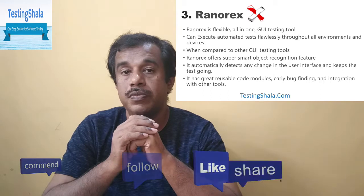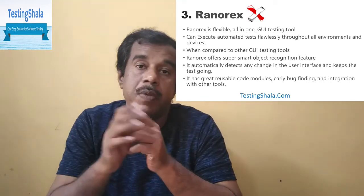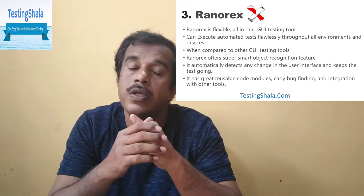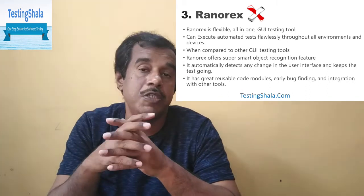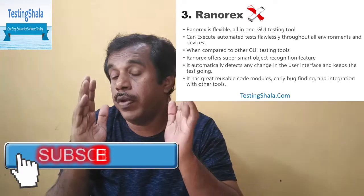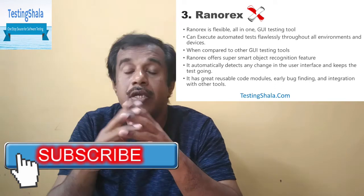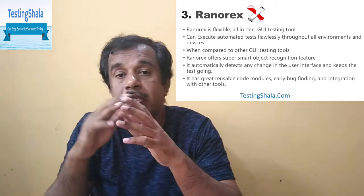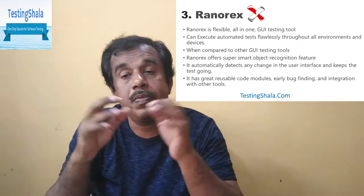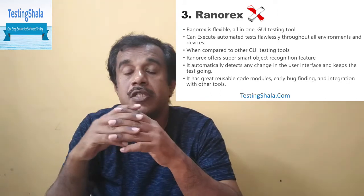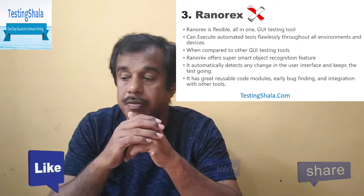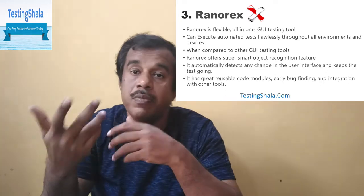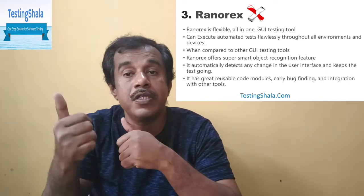The third best automation tool is Ranorex. Ranorex is one of the best GUI automation tools available in the market. It can execute test automation across various environments and devices very seamlessly. If any GUI elements change in the application, Ranorex easily finds those changes and keeps updating and running the test cases. It recognizes any changes in objects automatically, and it has features like reusable code modules and great integration capabilities with other automation tools.